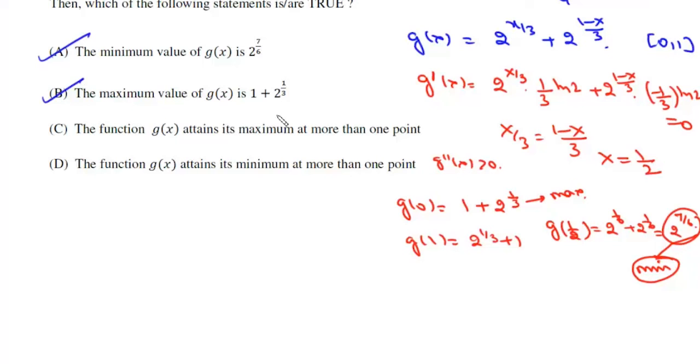Now C is g(x) attains its maximum at more than one point. So we have two points, zero and one, at which it attains its maximum value, so that means this option C is correct. Now it attains its minimum at more than one point, this is incorrect. So the correct options are A, B, and C.